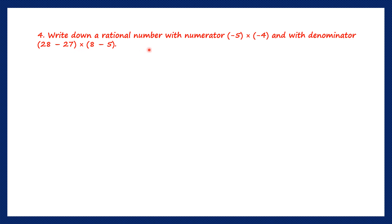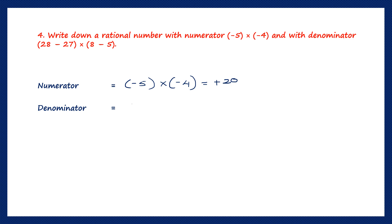Question 4: write down a rational number with the given numerator and denominator. The numerator is given as minus 5 into minus 4. Minus into minus is plus, and 5 times 4 is 20, so the numerator is 20. The denominator is given as 28 minus 27, in brackets, into 8 minus 5. That is 1 into 3, so the denominator is 3.